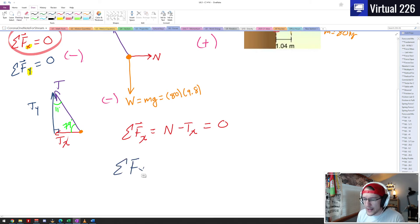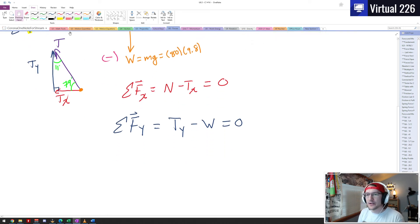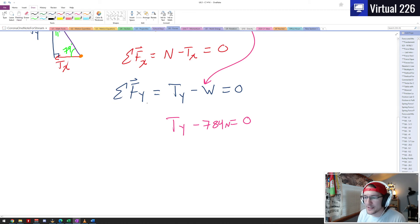And what we actually need to do is if we look at things in the y direction, if we sum up all of our y directional forces we're going to have two here. We're going to have the tension in the y direction which is going up so it's positive, plus a negative weight, so minus the weight equals zero. And this is really nice here because what we can do is we can substitute what we know for the weight. We know the weight is 80 times 9.8 which is 784, so we can say Ty minus 784 newtons equals zero, which gives us a pretty clear answer as to what Ty has to be. We pretty quickly see here that the tension in the vertical direction up and down is 784 newtons.